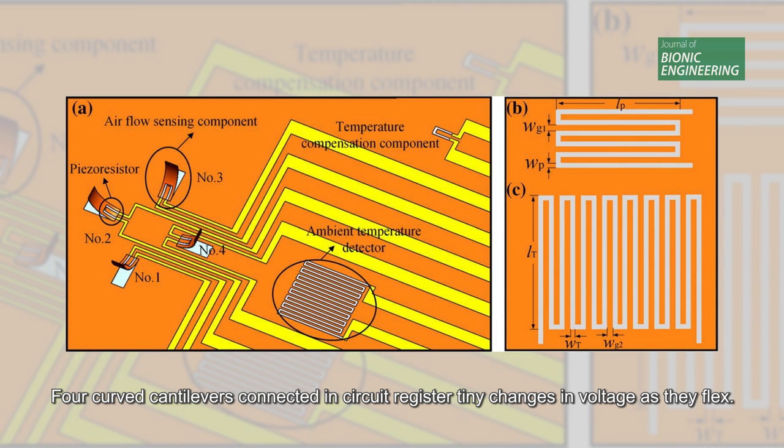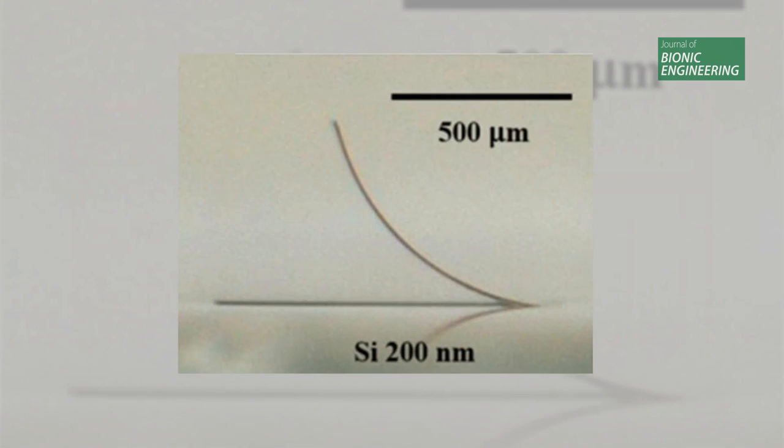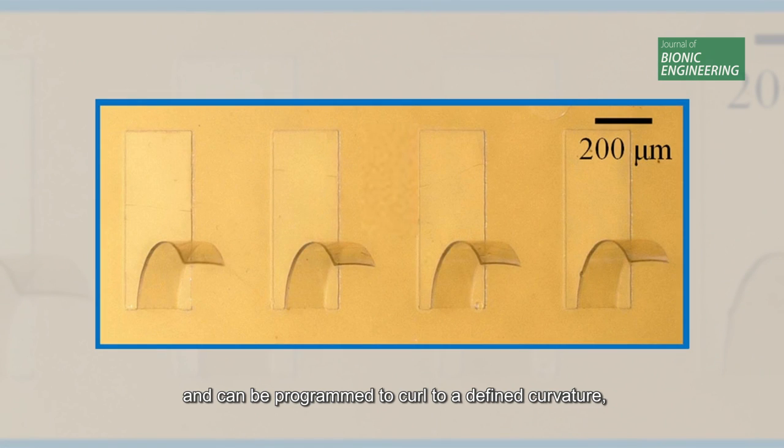Four curved cantilevers connected in circuit register tiny changes in voltage as they flex. Each is thinner than a human hair and about three times as wide and can be programmed to curl to a defined curvature thanks to the cantilever's polymer on silicon structure.